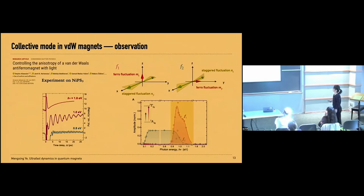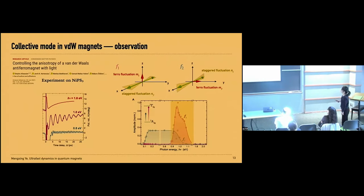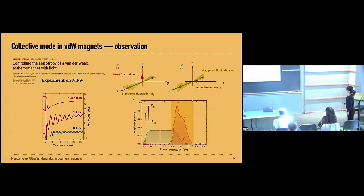For this nickel compound, this is indeed what has been claimed to be observed. They have seen two oscillations at different pump field energies: 1 eV and 0.8 eV denote the pump field energy, and you can see two periods of oscillations. I'm going to focus on one of them, called the F1 mode, which denotes a staggered fluctuation along the y-axis. If you look at how the amplitude of this oscillation depends on the pump photon energy, you see that it is peaked around one electron-volt.